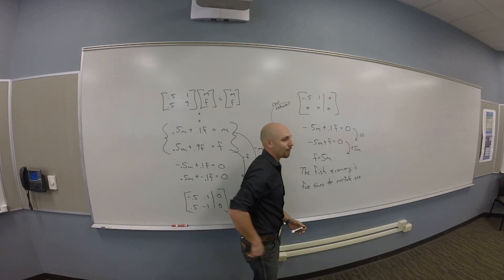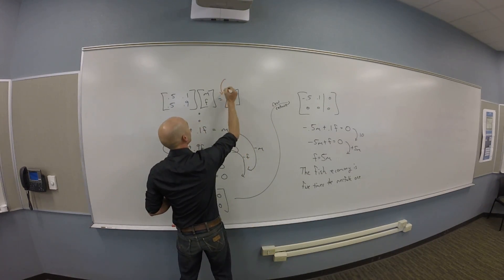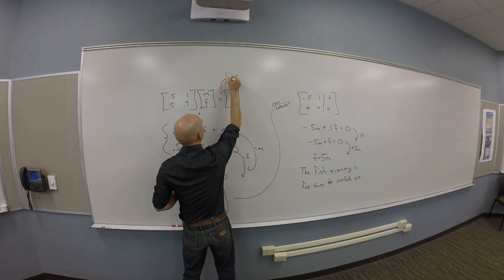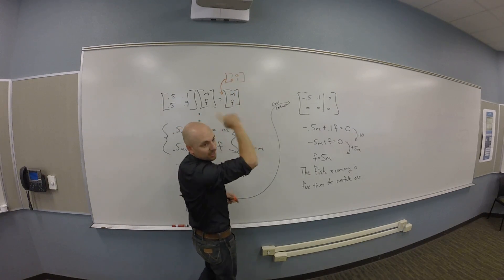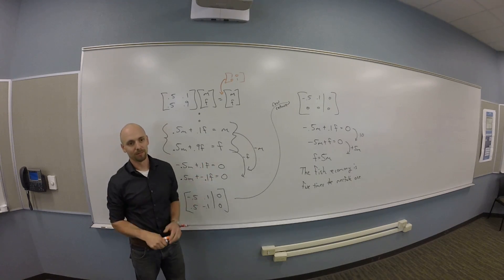So the other option was to throw right here an identity matrix and then subtract to the other side. That'll get you the same thing pretty fast. Either way. Cool? Questions on that?